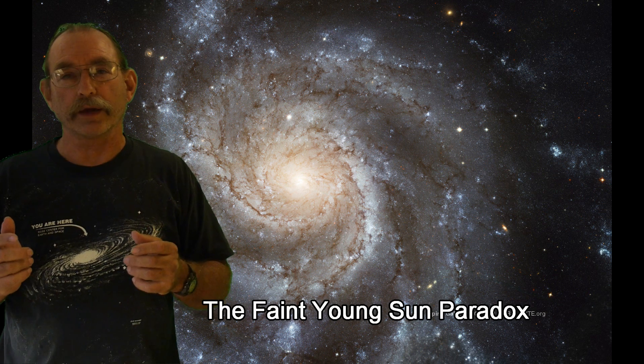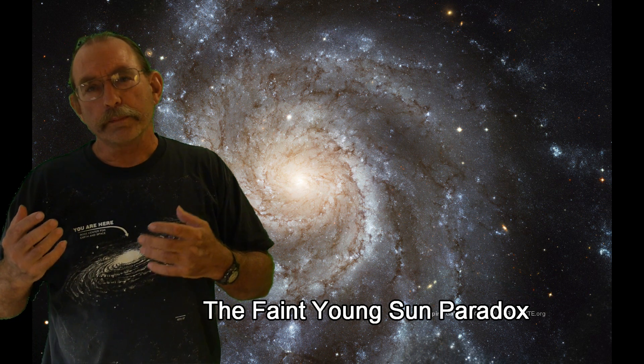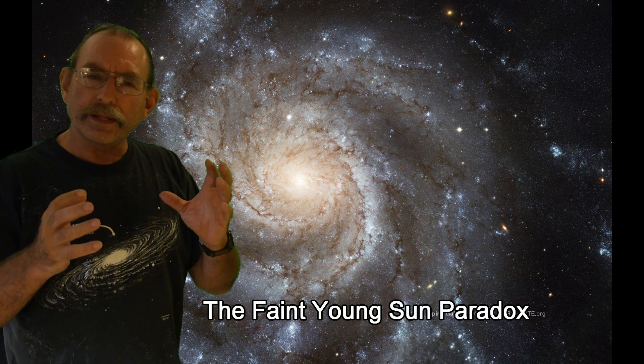One is how it resolves what's called the faint young sun paradox. Now Carl Sagan and George Mellon in 1972 noticed that the energy output of the sun in the distant past, let's say 4 or 3 billion years ago, would be predicted. The amount of energy coming from the sun was about 70% of what the energy from the sun is today.